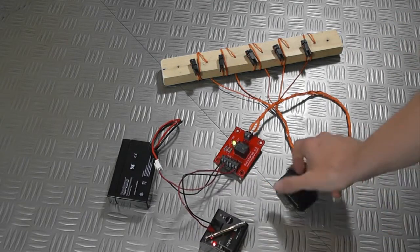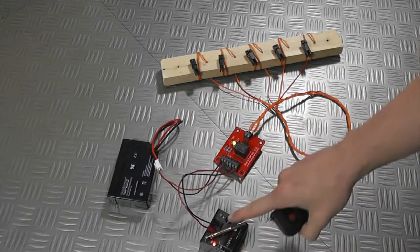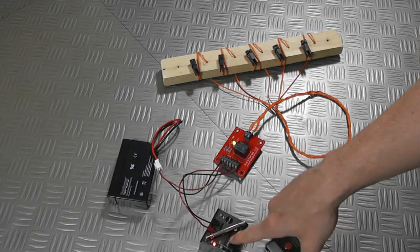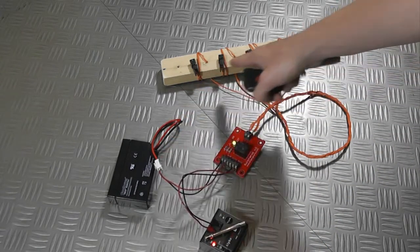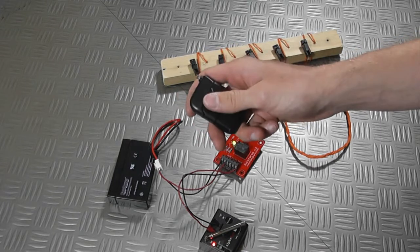So now, if I were to press this button on the remote control, this little 6 volt output firing system can now switch the current from the battery and fire all of these Talon igniters at once. So let's go ahead and do that.